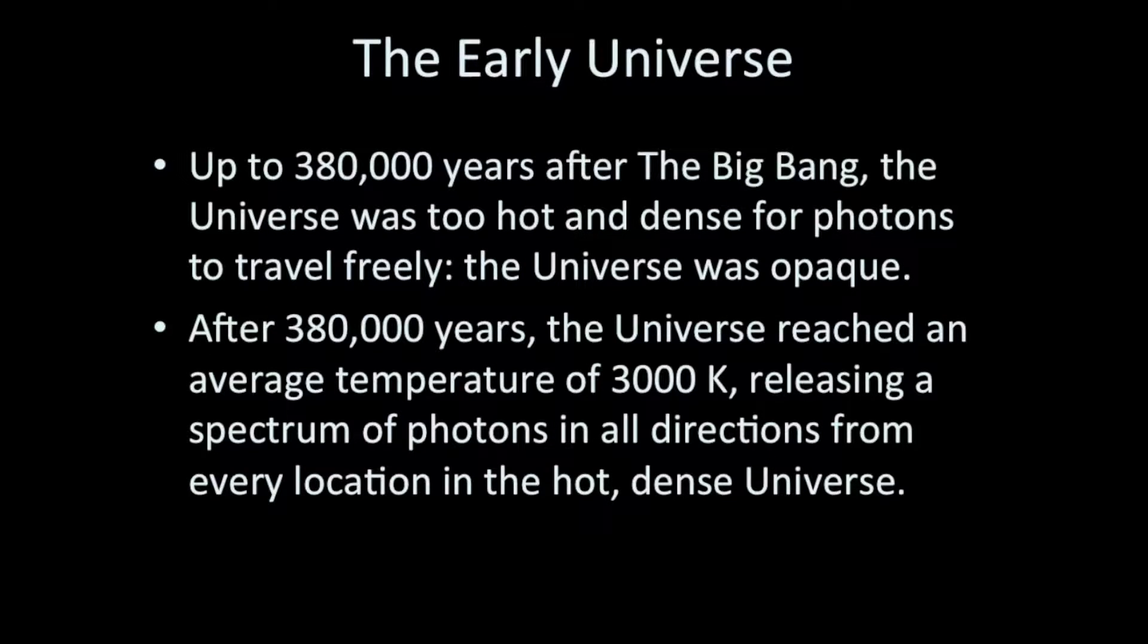For most of the early history of the universe, up until about 380,000 years after the Big Bang, the universe was so hot and so dense that photons of light would be scattered very quickly in their journeys through space. That is, you wouldn't be able to see through space because photons would be scattered by the electrons, which were disassociated from the atoms at that high temperature and density. The universe would be opaque.